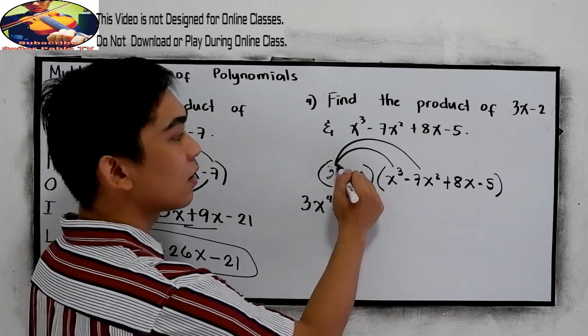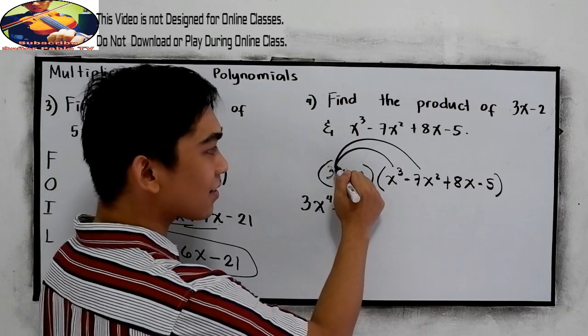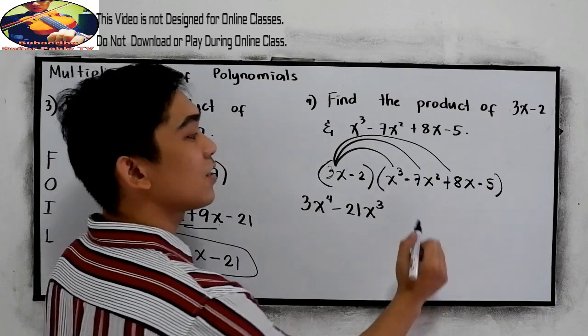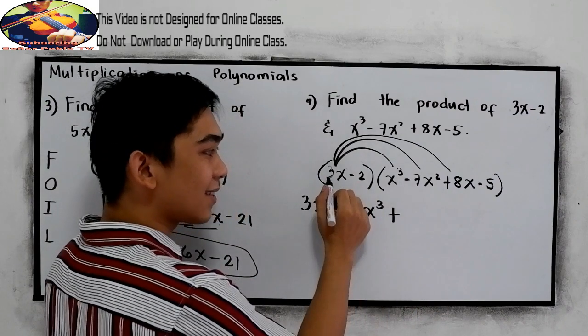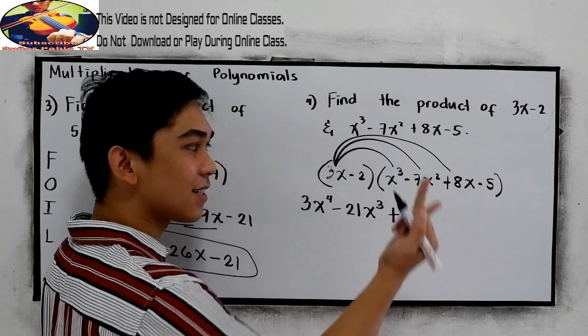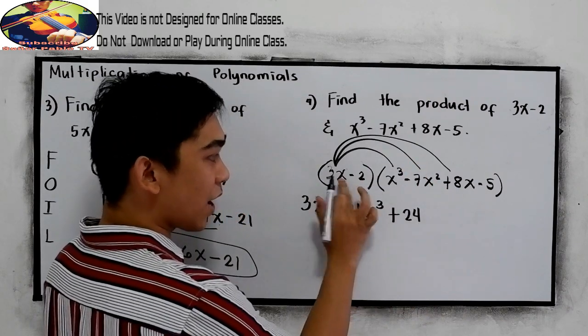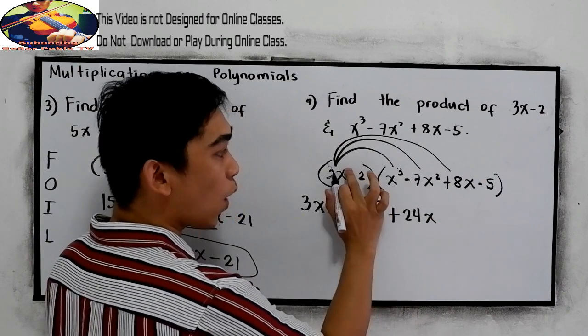Next, 3x times 8x. So that is positive. 3 times 8 is 24. Now we have x, 1 plus 1, which is 2.